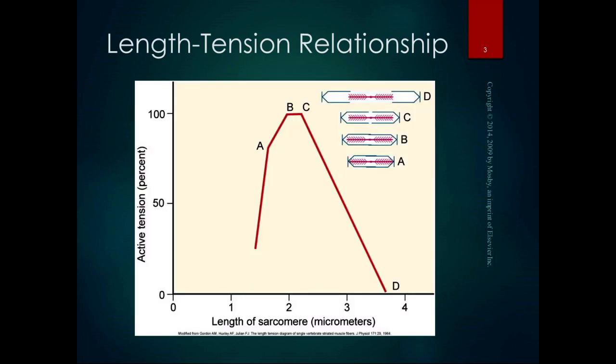This graph is from the book. I like graphs — you'll find that out when you listen to my lectures. If you can display something graphically, sometimes it can really start to make sense in your mind. This graph shows active tension as a percentage and the length of the sarcomere. We're down to the sarcomere again, because the sarcomere is the basic unit of muscle contraction.